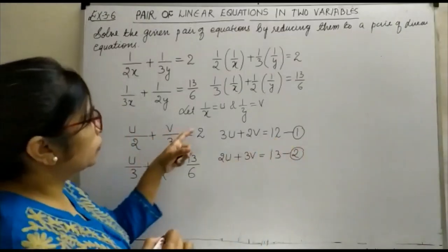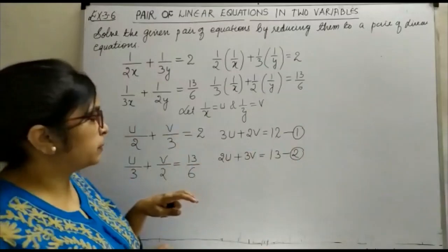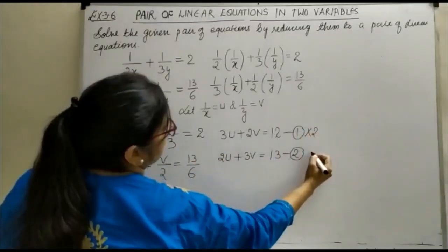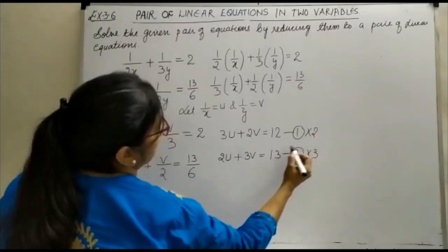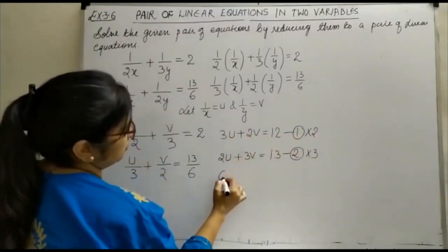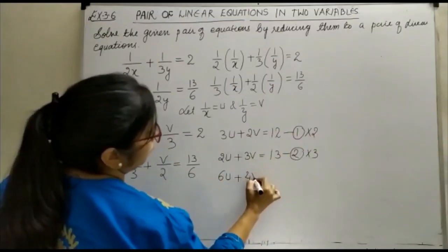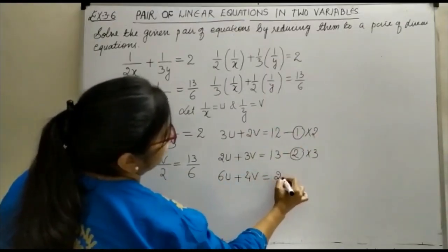Now, you can solve for u and v by any of the algebraic method. Here I am taking the coefficient of u, that is 2 and this is the coefficient of 3. So 2, 3 is 6, this is 6u plus 2, 2 is 4, 4v is equal to 24.